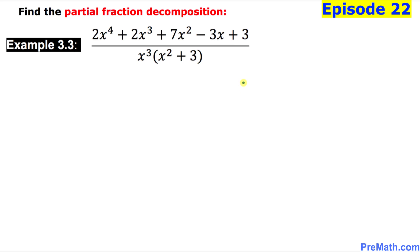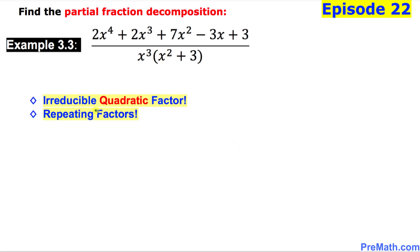Let's look at the denominator. As we can see, we have x to the power 3, which means we have repeating factors. The other factor is x squared plus 3, which is quadratic and cannot be factored — we are going to call it an irreducible quadratic. So we have an irreducible quadratic factor as well as repeated factors.